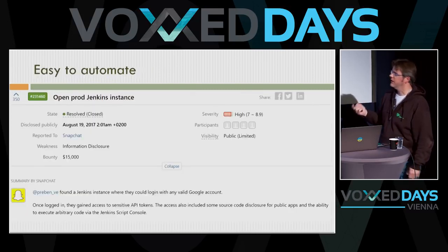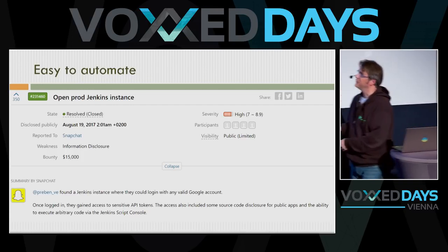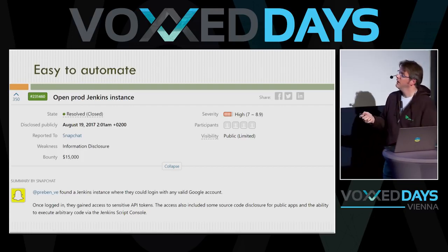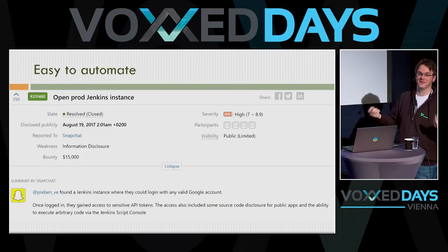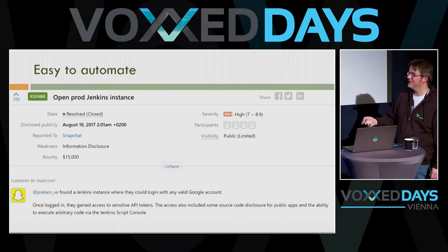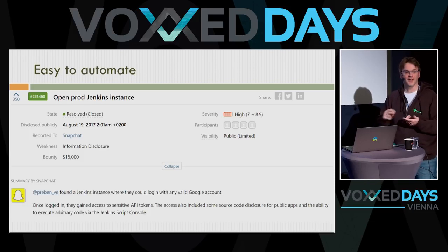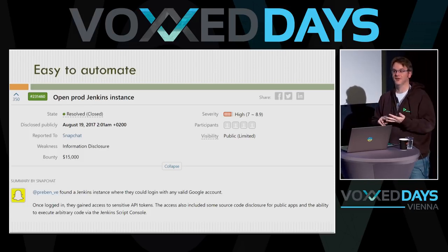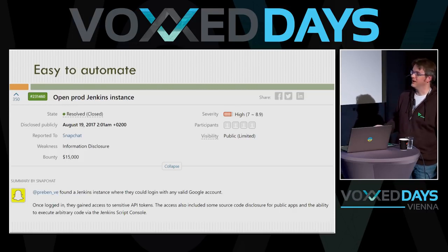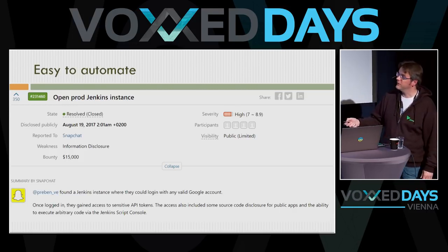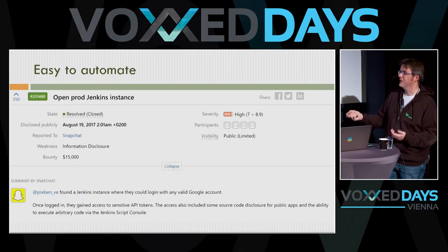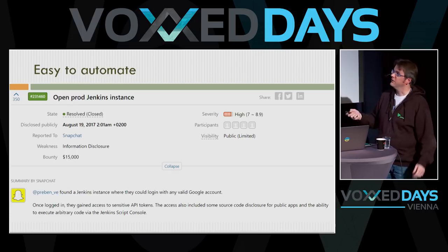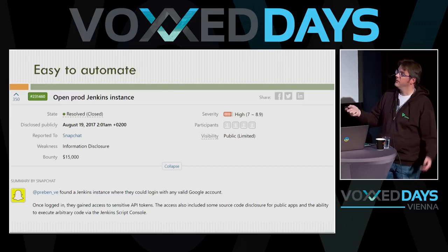From a hacker one bug bounty: Snapchat had a Jenkins instance open to the internet — everybody with a valid Google account could log in to Snapchat's Jenkins. That's bad because Jenkins typically has all the API keys, can deploy, can commit to GitHub. If you can log into that server you have all the keys to the kingdom. A $15,000 bounty was paid because it was very simple but the disaster potential was enormous — all credentials are on the Jenkins server.